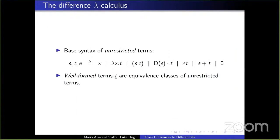An important property of cartesian differential categories is that there is a reasonably well-behaved calculus for them — the differential lambda calculus, introduced by Ehrhard and Regnier, whose models are particularly well-behaved cartesian differential categories. One might ask whether the same is true of difference categories, and fortunately the answer is yes: there is such a thing as a difference lambda calculus, though it turns out to be not an entirely trivial extension of the differential lambda calculus.